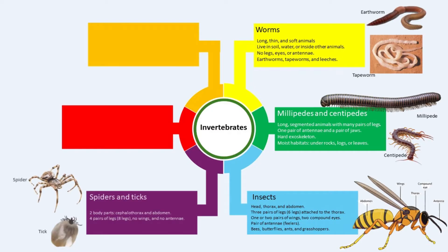Spiders have two body parts: cephalothorax and abdomen. A spider has a soft, tough, leathery outer skin but it is not an insect. They have four pairs of legs — eight legs — no wings and no antennae. Ticks are parasites, which means they feed on the blood of other animals.